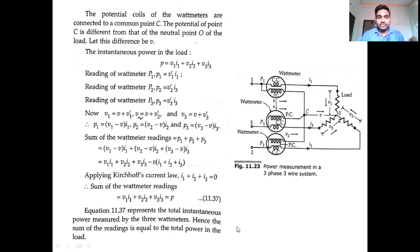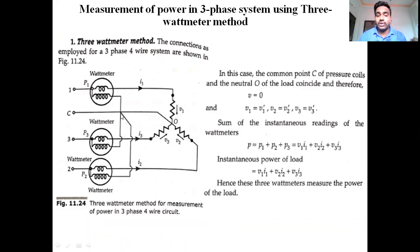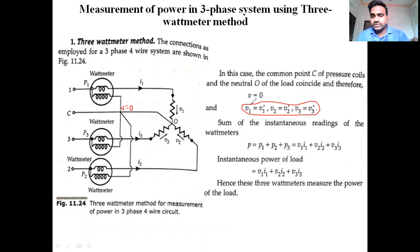From the expression, if V = 0, then V1 = V1', V2 = V2', V3 = V3'. The common point of the voltage coil elements is connected on the neutral wire, making the terminal voltage at the common point (small v) equal to zero. This makes the expression: V1 = V1', V2 = V2', V3 = V3'.